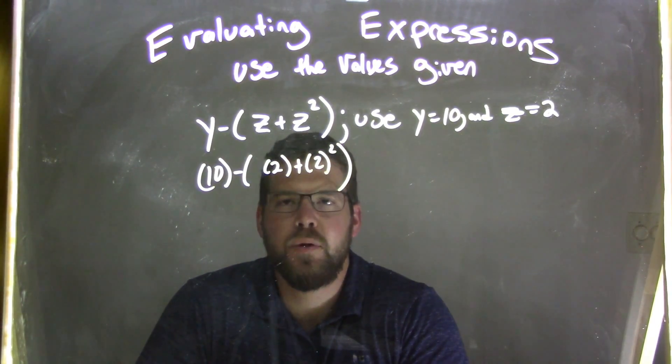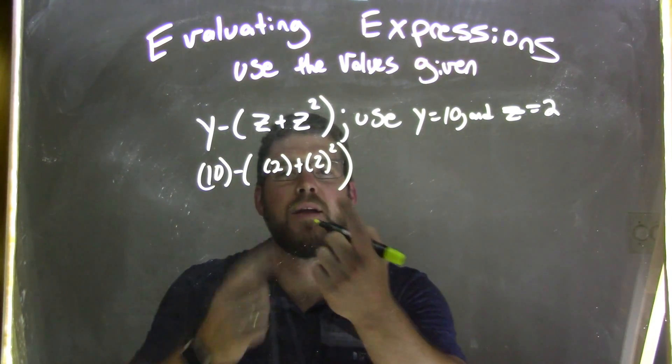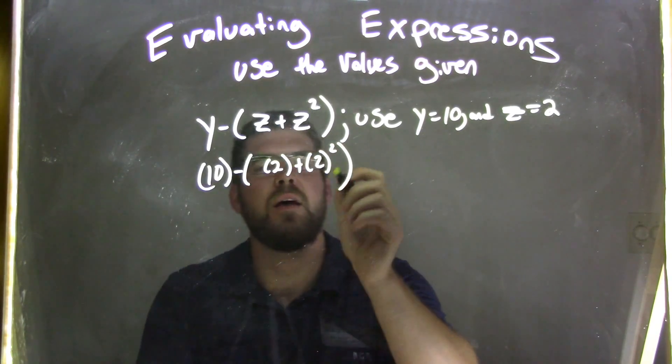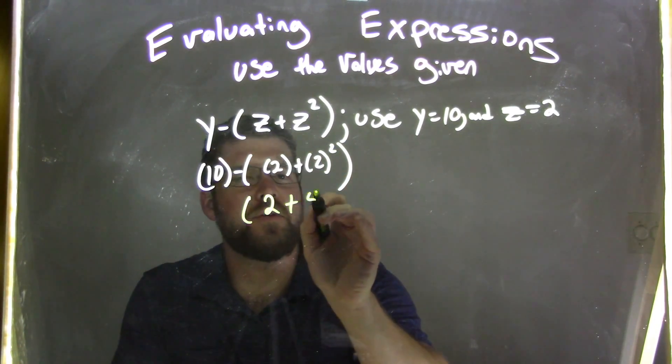So exponents come first. We deal with inside the parentheses, then we have to deal with the next part. We deal with the inside, then we see the 2 squared, we deal with that. So you have 2 plus 2 squared, which is 4.